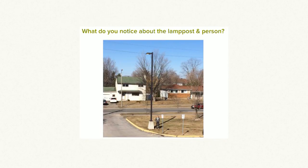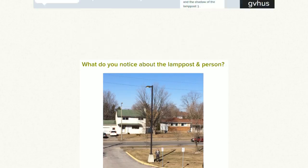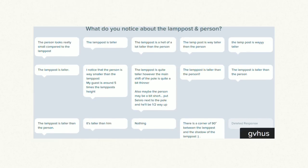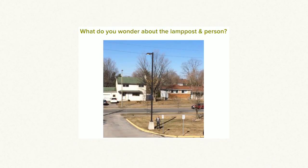Act 1: setting up the problem. I present students with an image and I ask them, what do you notice? In this case, what do you notice about the lamppost and the person? Some examples of things my students noticed: the lamppost is taller than the person, and both the lamppost and the person have created shadows on the ground. Next, I ask my students, what do you wonder about the lamppost and the person?